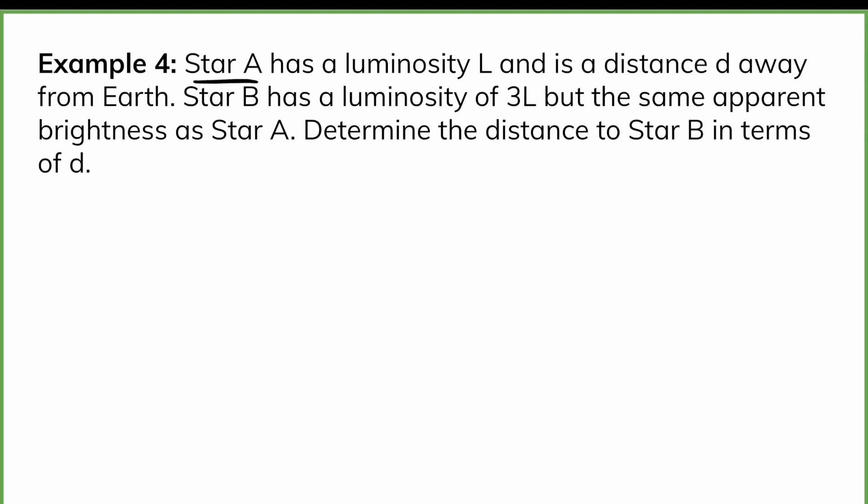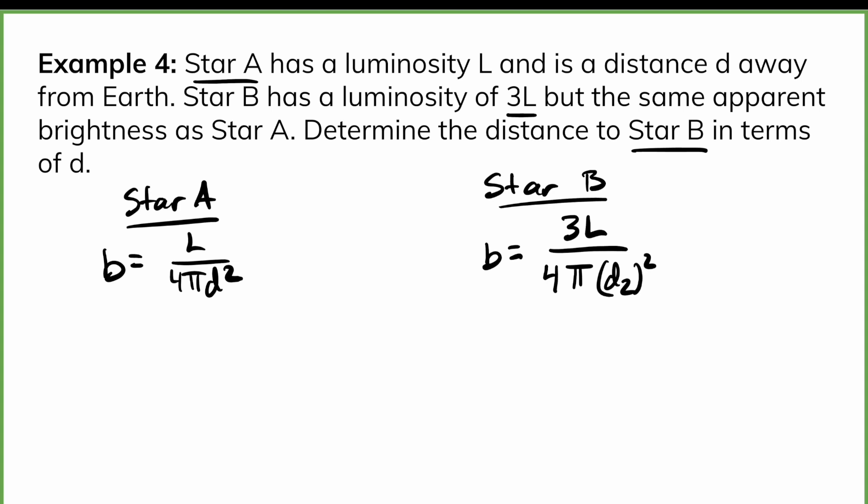We have a star A with a luminosity L. It's a distance D away from Earth. Star B has luminosity 3L but the same apparent brightness. Determine the distance to star B in terms of D. So I want to take my star A and write out an equation for star A. So star A is going to tell me that B is equal to L over 4 pi D squared. So I'm using the apparent brightness formula. These are the values that I was given. Now star B has the same apparent brightness, so I can use the same letter here. I'm going to use B. We know the luminosity of star B is 3L. But the distance is not the same. So we have to use a different variable, 4 pi. And sometimes I'd use D2 or something like that, or you could use X, up to you.